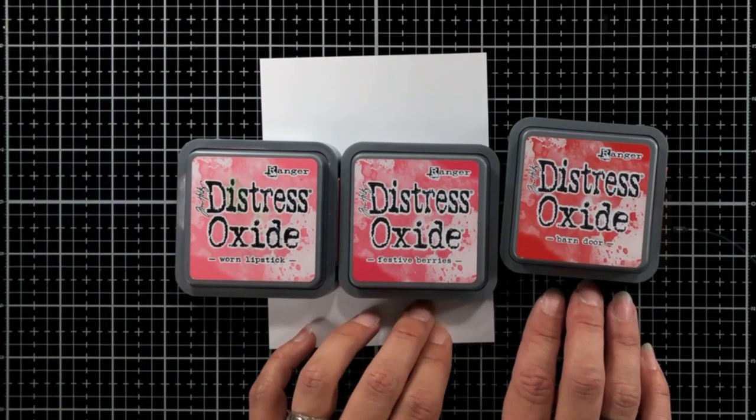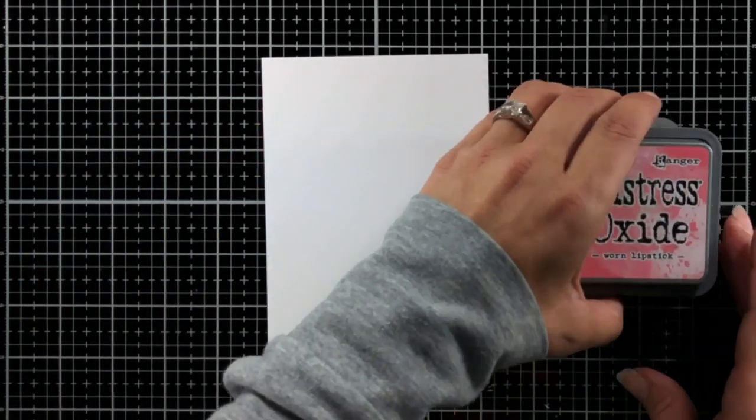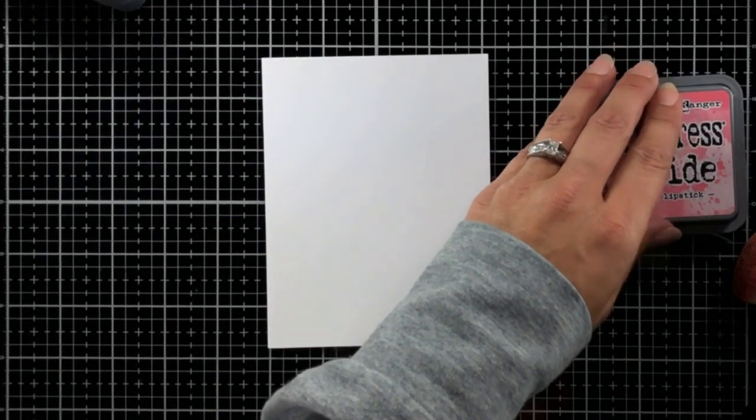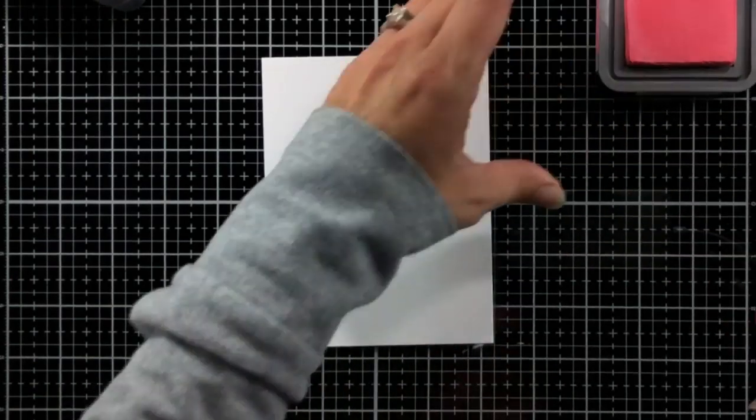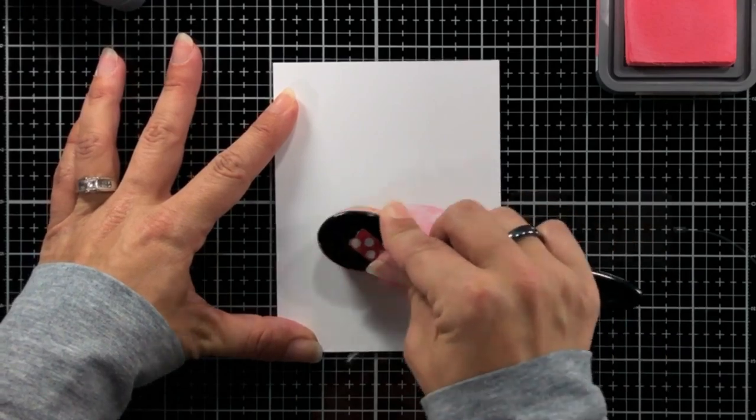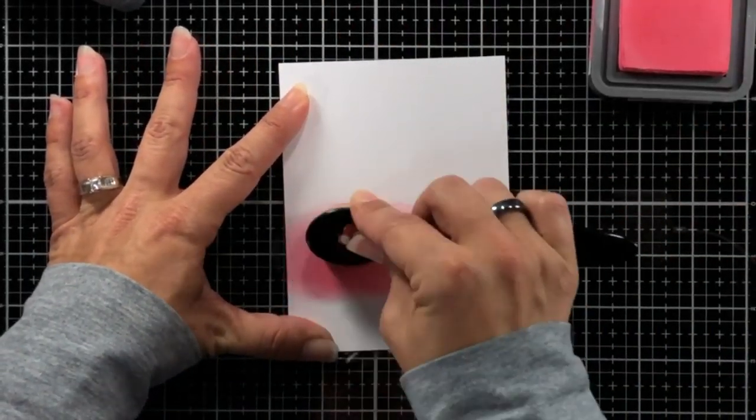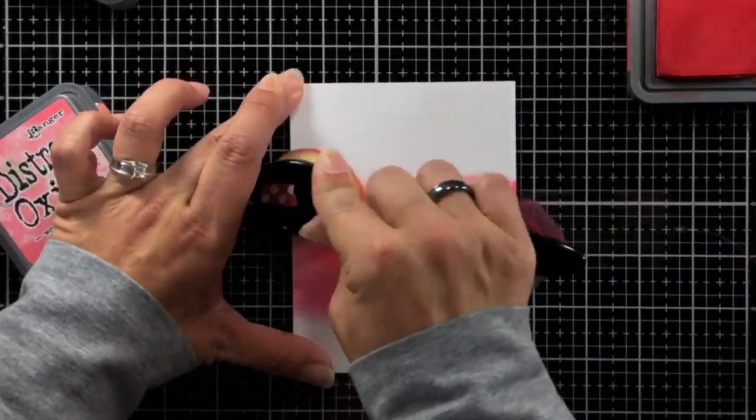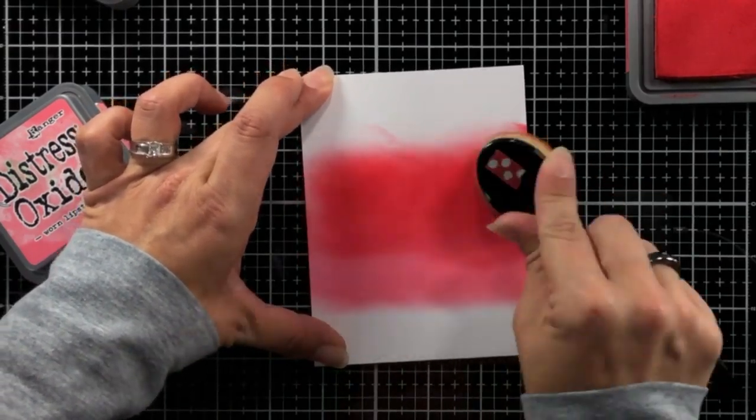Next I'm going to work on my background for my card. Now I'm actually going to repeat this step so I'll have two panels ink blended the same way. I'm only going to show you just one on screen for now. I'm going to be using Worn Lipstick Festive Berries and I had started with Barn Door but then switched to Aged Mahogany because Barn Door just wasn't giving me enough of a contrast in the colors. And I'm using the Lawn Fawn White Cardstock to ink blend. I'm not going all the way down to the bottom because I know I'm going to have my rooftop there so I don't need to ink blend that part.